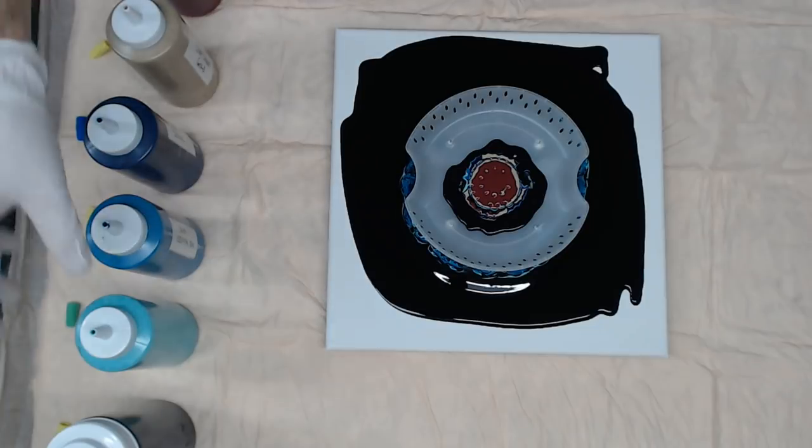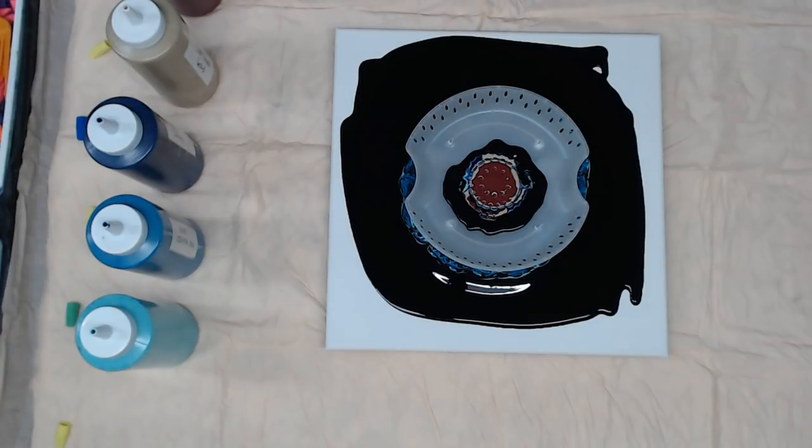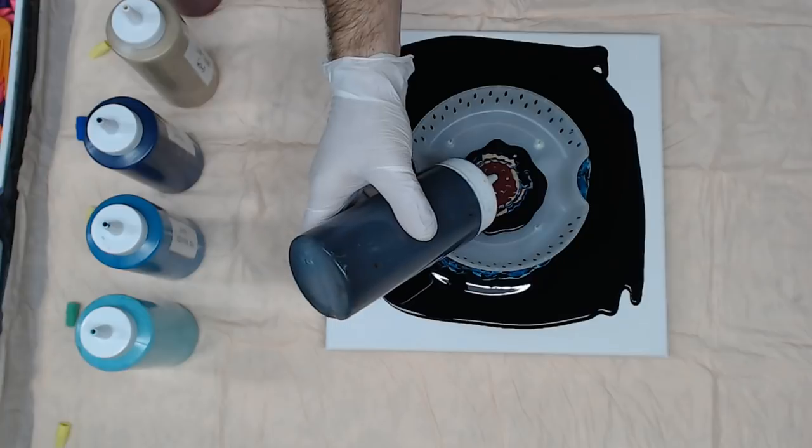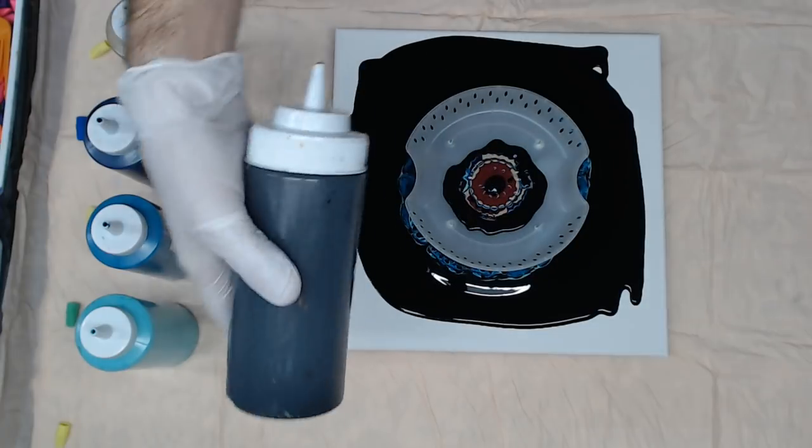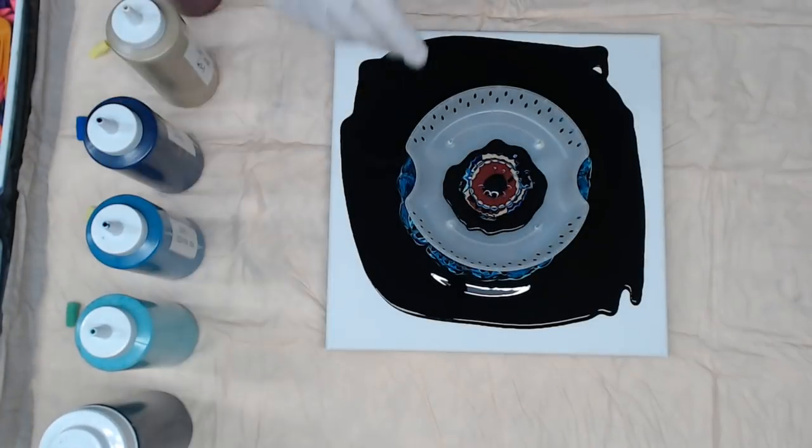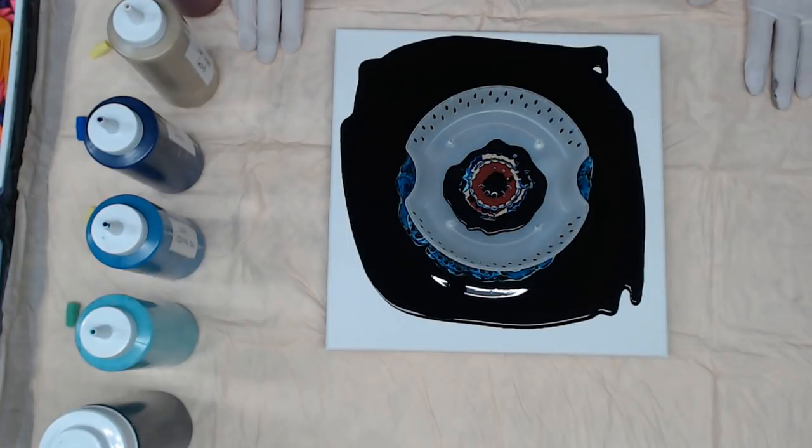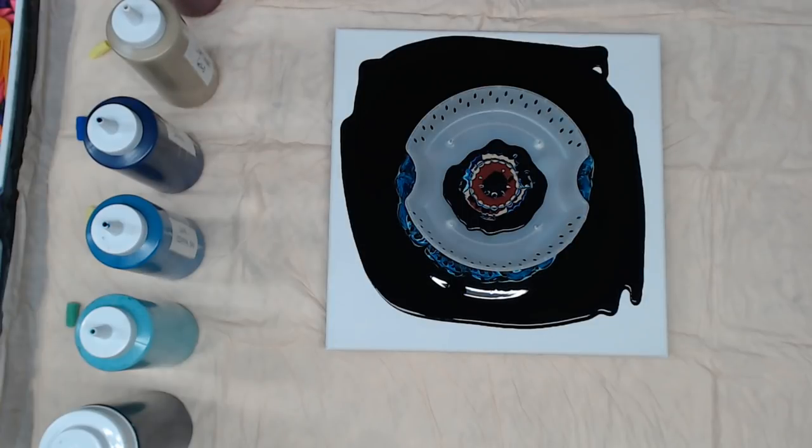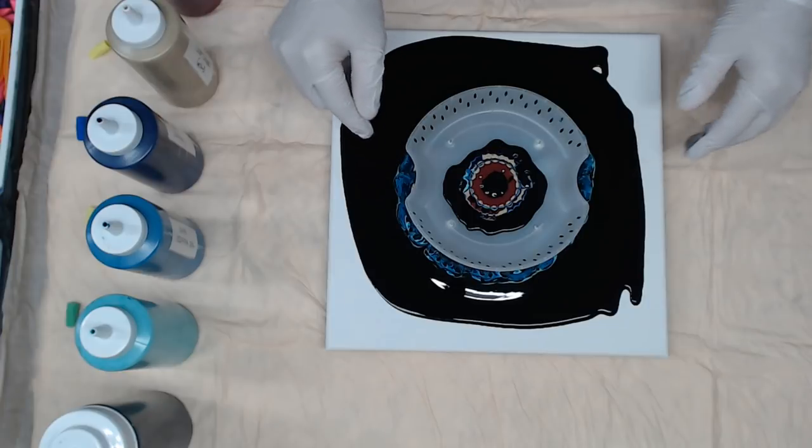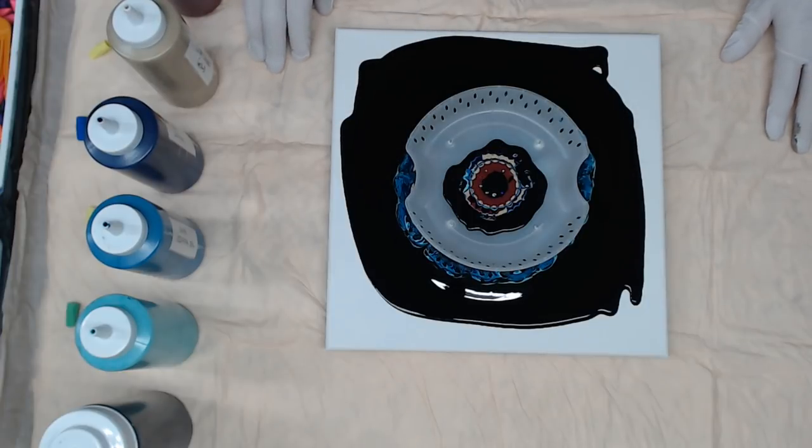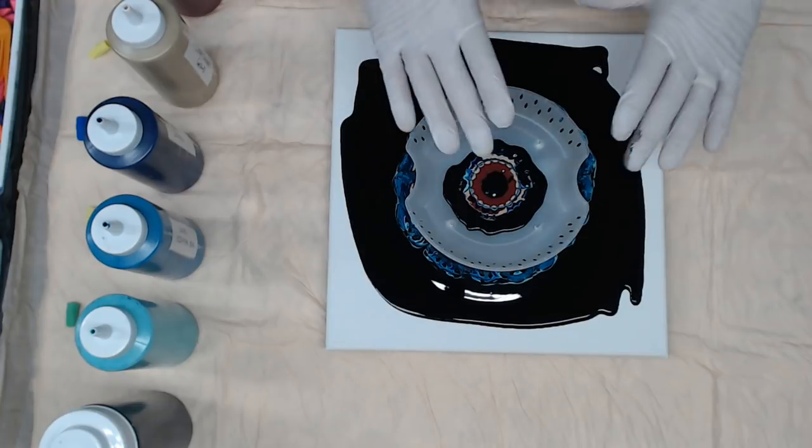I think what I want to do is I'm going to put just one more dot of black in that center. So paint's flowing through, getting some kind of funky designs coming out. Just waiting for that paint to dissipate, and it's slowly spreading out.